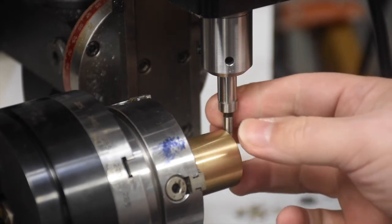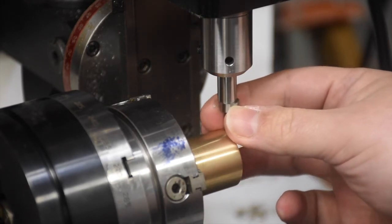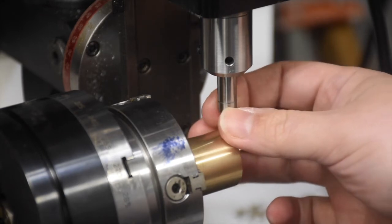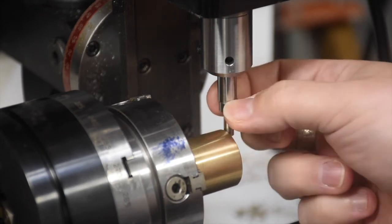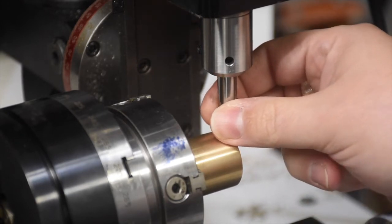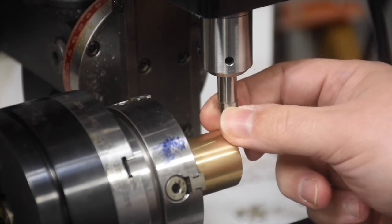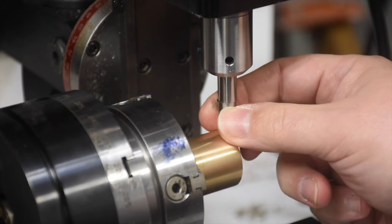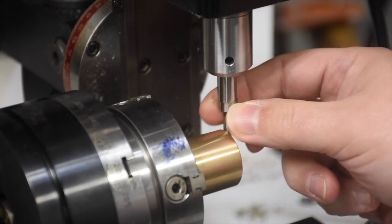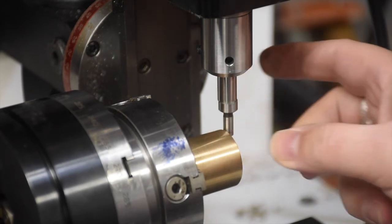So when you have your edge finder, you want to make sure that this slides real easy. If there's any grab at all, start by cleaning those surfaces. You don't want any oil in there. Oil can accumulate grit and dirt and gunk. And this thing has to slide easily. And after cleaning it off, if it still feels kind of gunky and grabby, those surfaces may need to be relapped.